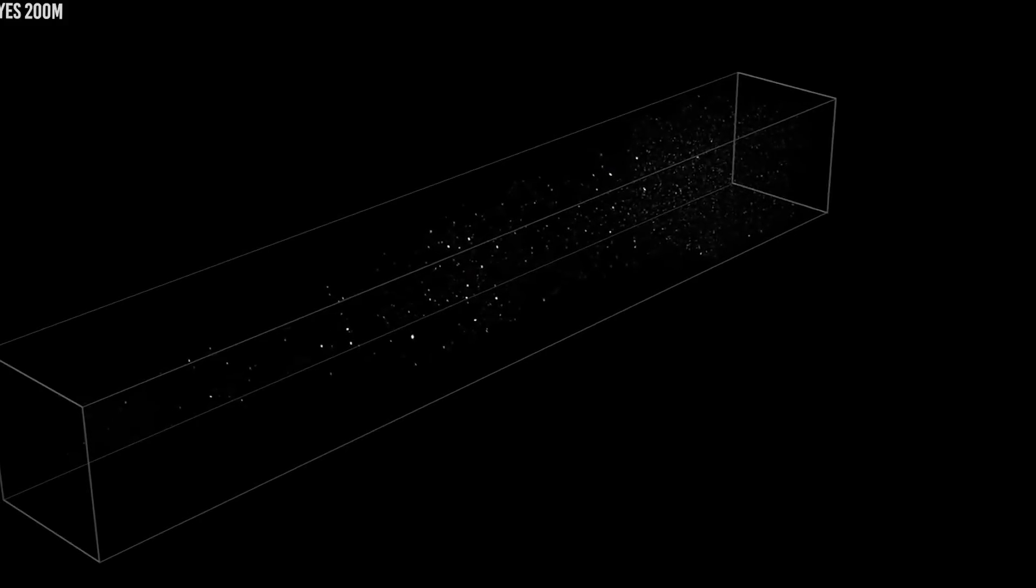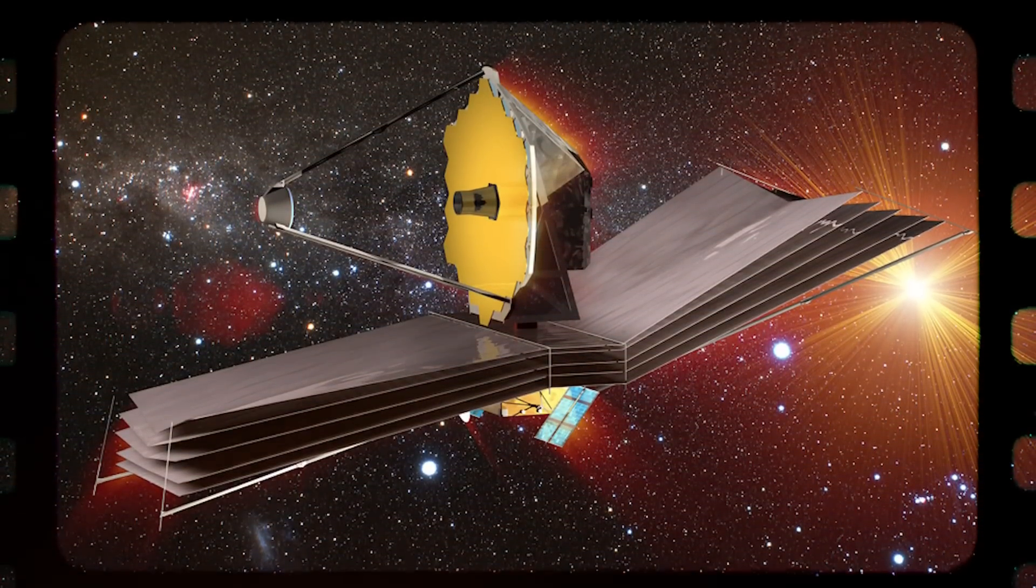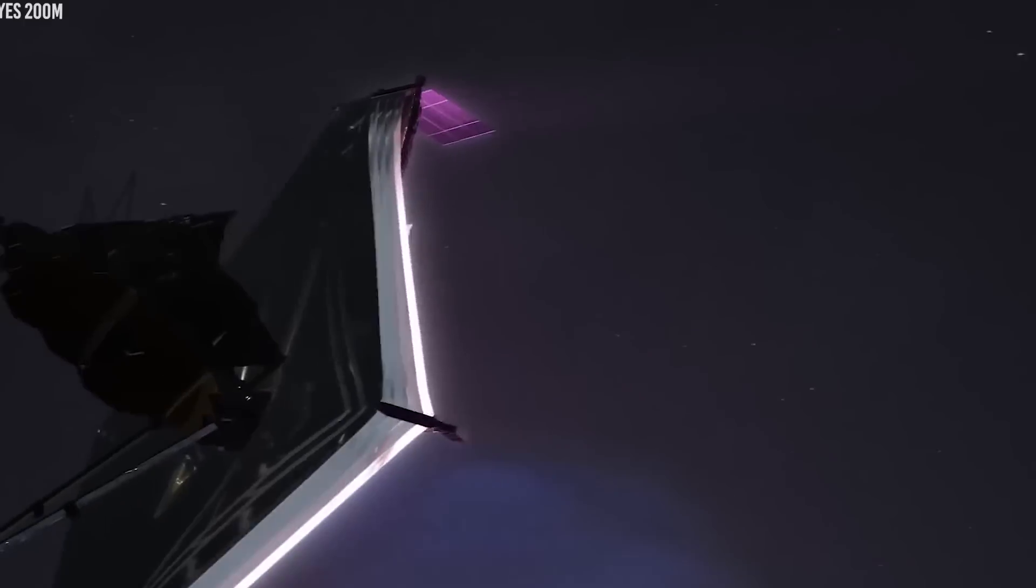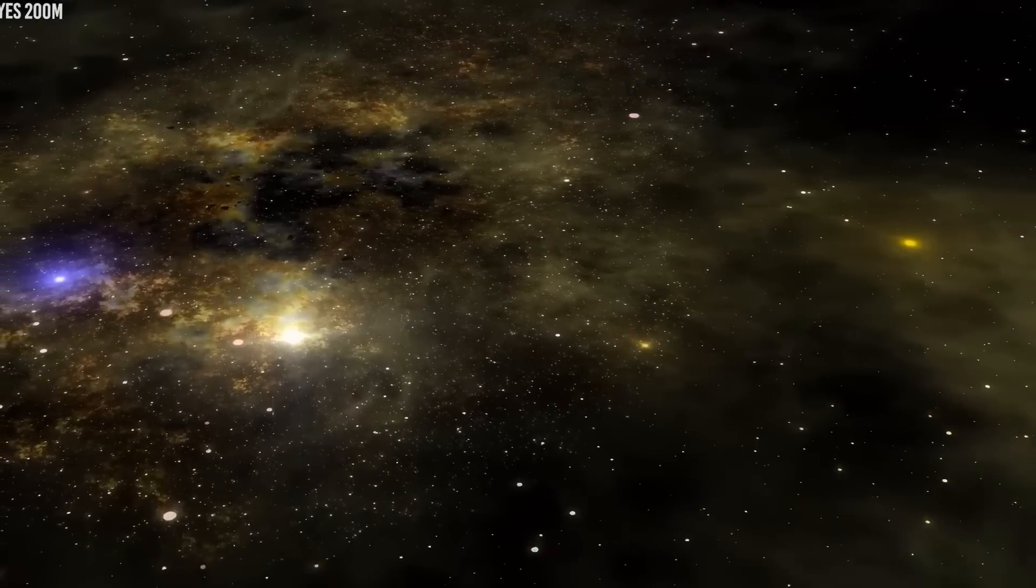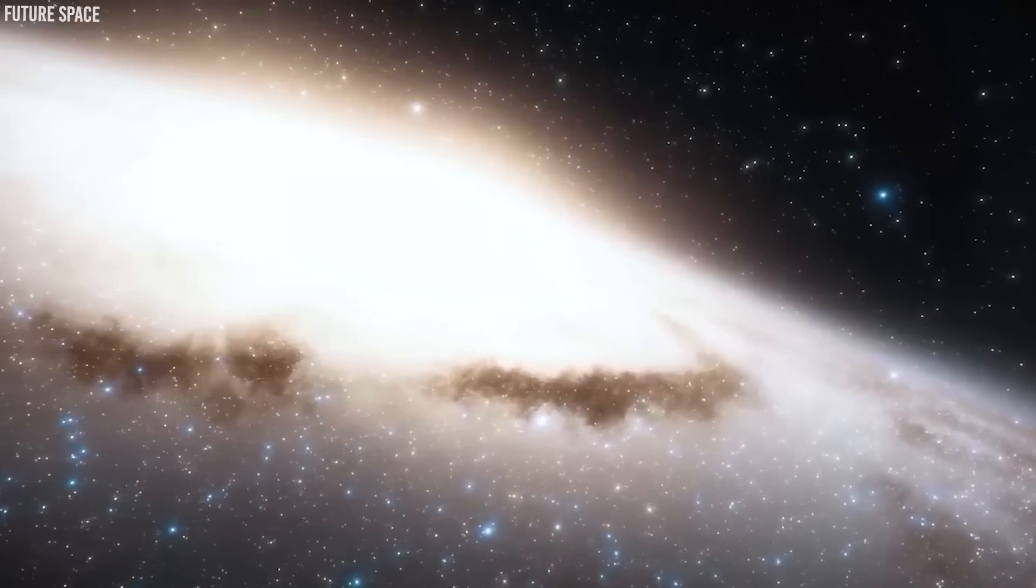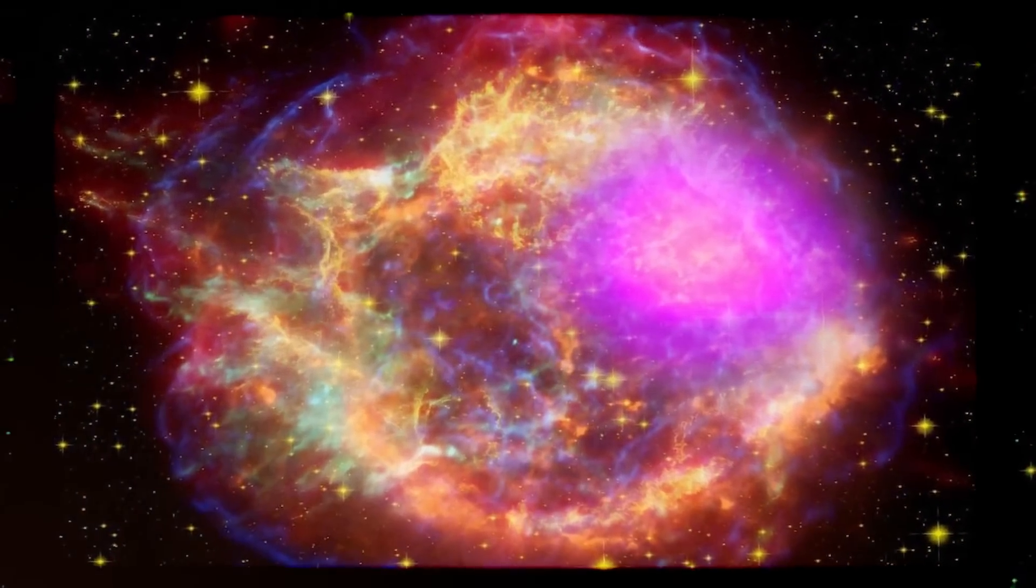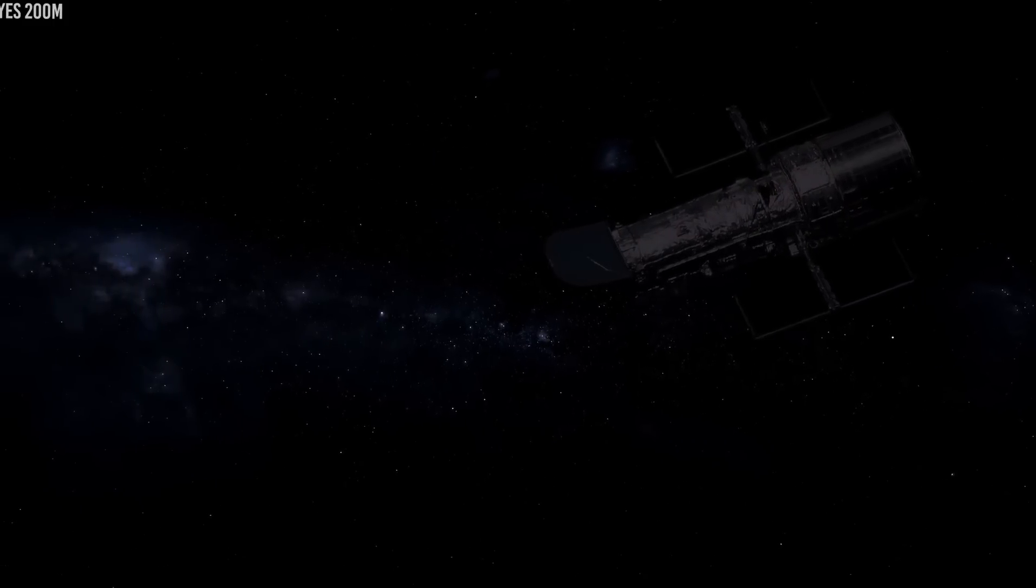Imagine a telescope with the power to see through cosmic curtains. The James Webb Space Telescope is that and more. Its secret weapon? An extended range that punches through the dust clouds that usually veil celestial sights.